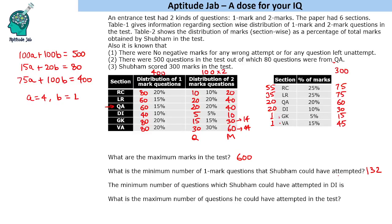The next question: what is the minimum number of questions Shubham could have attempted in DI? He got 30 marks in DI. To minimize attempts, he maximizes use of two-mark questions: 5 two-mark questions give 10 marks, then 5 more two-mark questions give 10 more, and he scored 20 remaining marks from 20 one-mark questions. So the minimum total is 25 questions in DI.